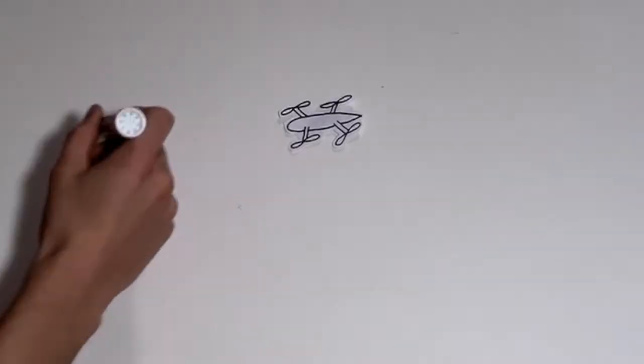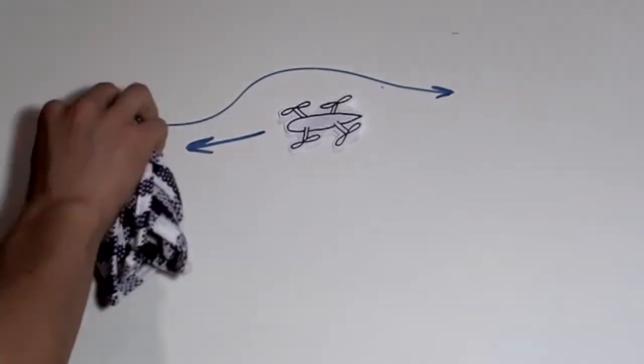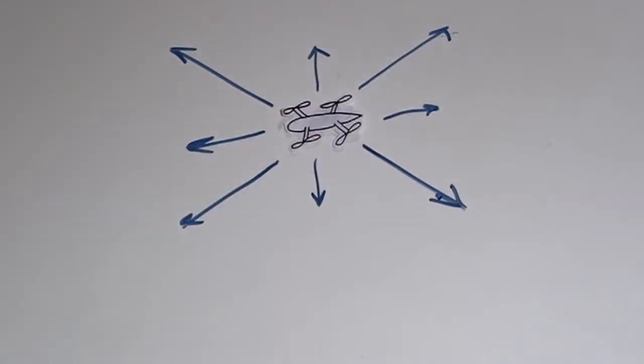VTOL creates an interesting problem for analyzing fluid flow over the drone profile because we're no longer just looking at the aerodynamic properties as it moves forward through a fluid. As the drone is now able to hover, this increases the potential angles of flow the drone profile may experience.